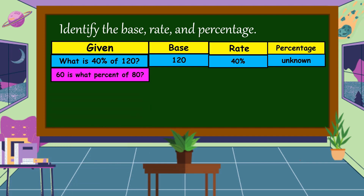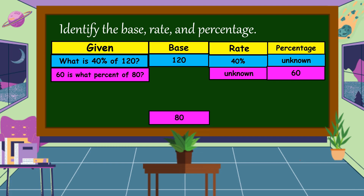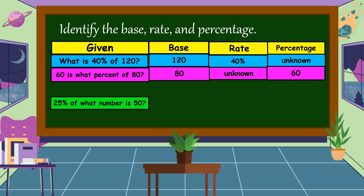Next example: 60 is what percent of 80? What are we going to find? We're going to find the rate — the rate is the unknown. 60 is the percentage, and 80 is the base.